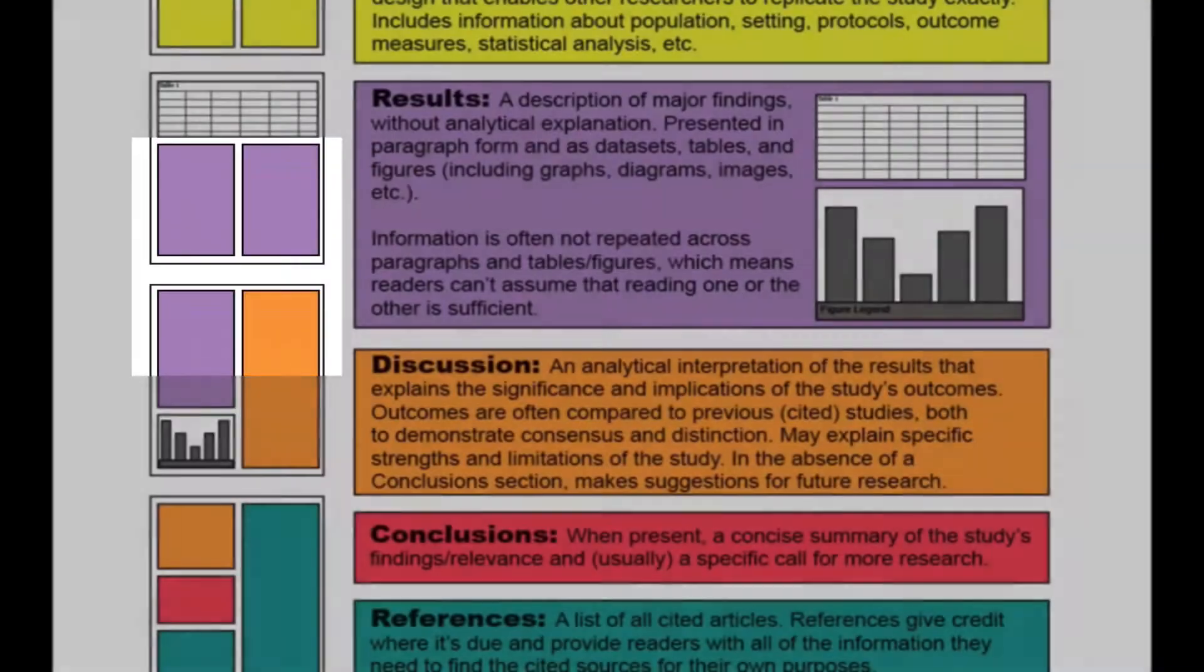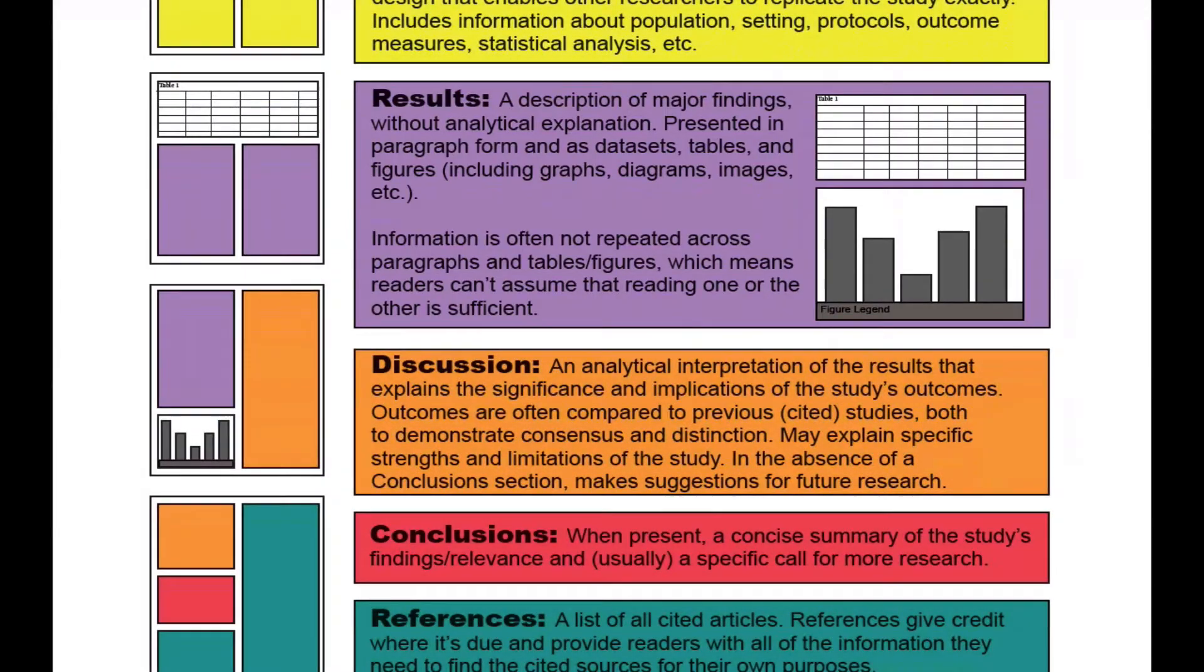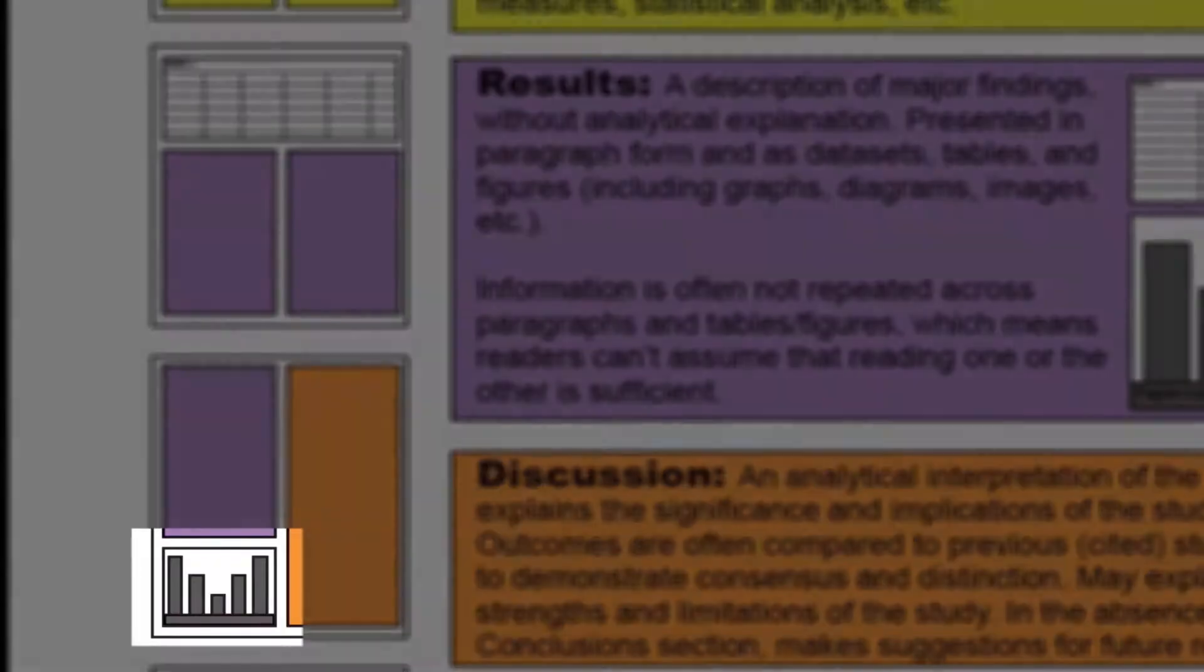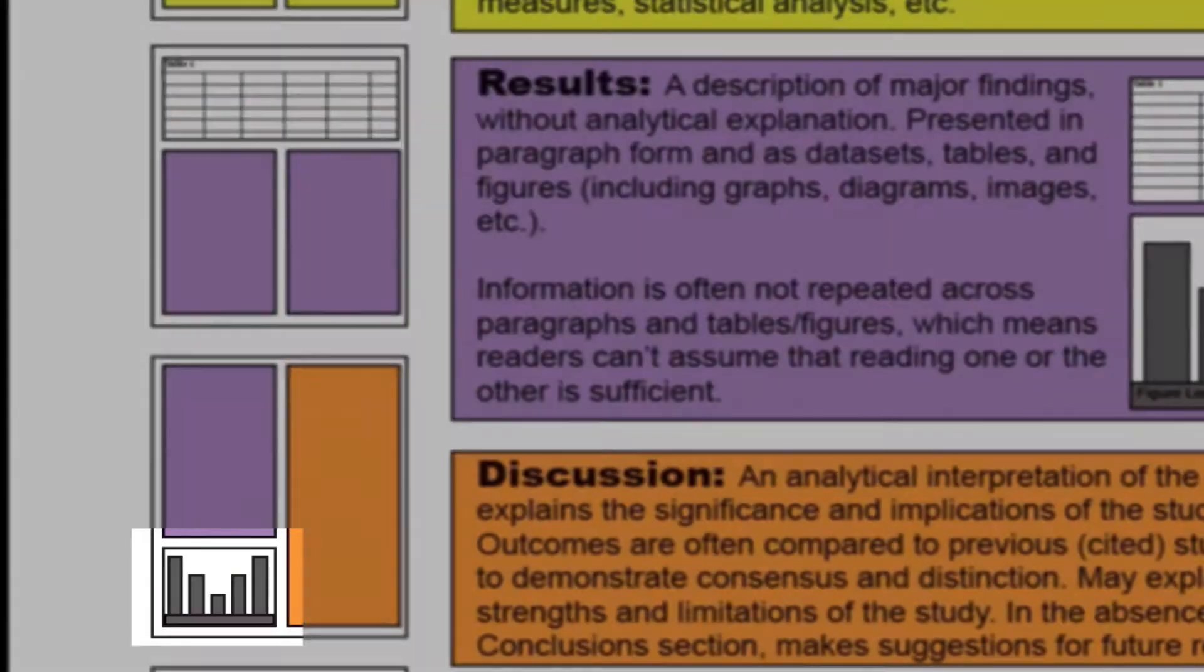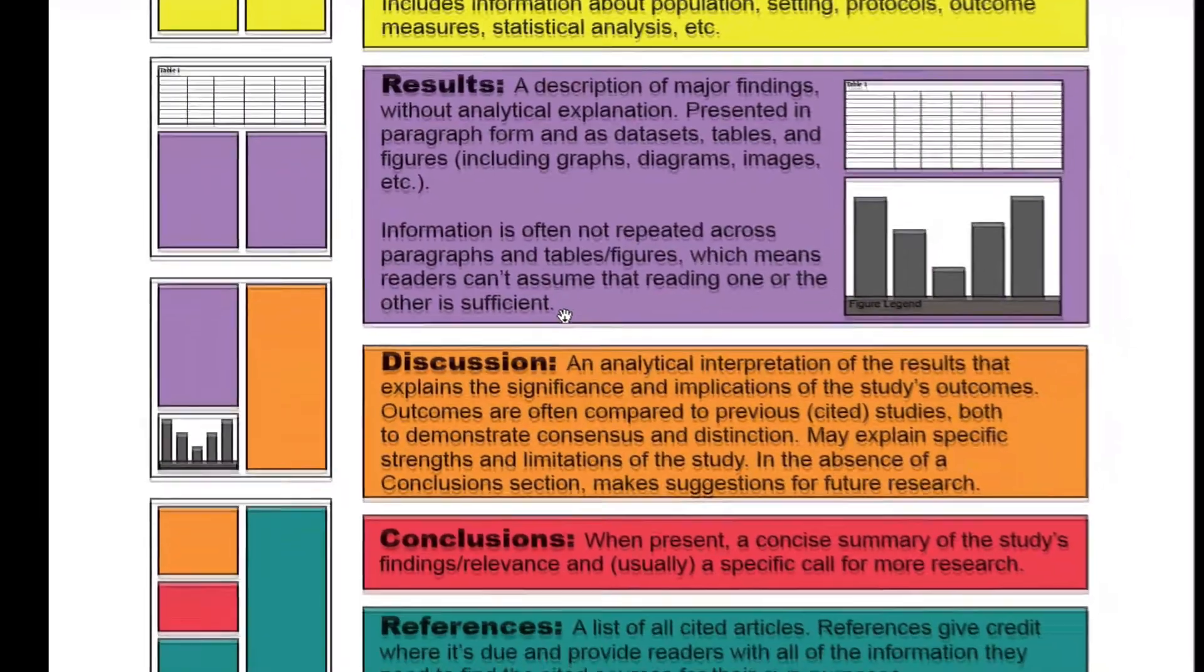The results section is a description of notable and relevant study findings presented without any analytical explanation. The paragraphs of text in any tables, figures, or data sets work in conjunction with one another to provide just the facts. When reading a results section, it's important not to assume that the tables and figures are just graphic representations of what's already in the body paragraphs. Usually, they are just as important to understanding the study's findings as the textual explanations.